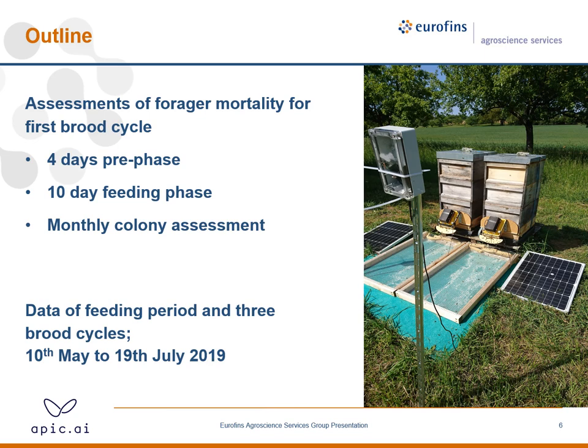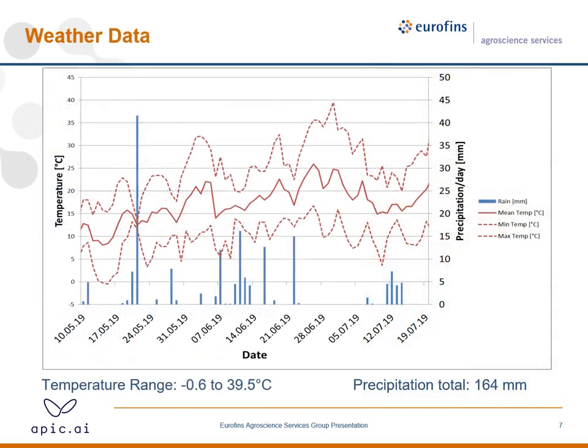We wanted to continue, but we lost a queen on the 13th of June, and then further on we lost hives because of very high temperatures. The rain was about 160 millimeters — roughly 100 millimeters less than the long-term average — and the temperature range was from minus 1 to 40 degrees Celsius.